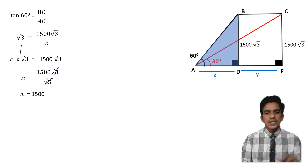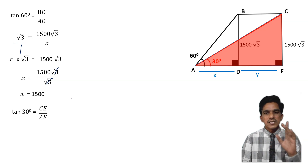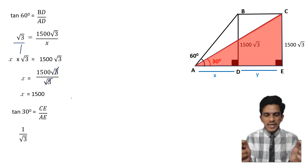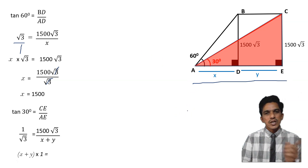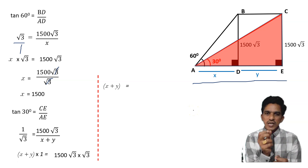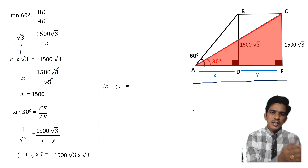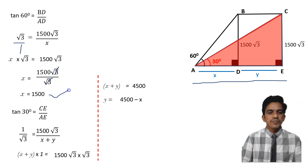Now let us consider the bigger triangle ACE. The angle of elevation is 30 degrees. Tan 30 equals CE by AE, that is 1500 root 3 by X plus Y. So 1 by root 3 equals 1500 root 3 by X plus Y. Cross multiplying, X plus Y equals 1500 root 3 into root 3 equals 1500 into 3 equals 4500. Therefore Y equals 4500 minus X equals 4500 minus 1500, which gives Y equals 3000.